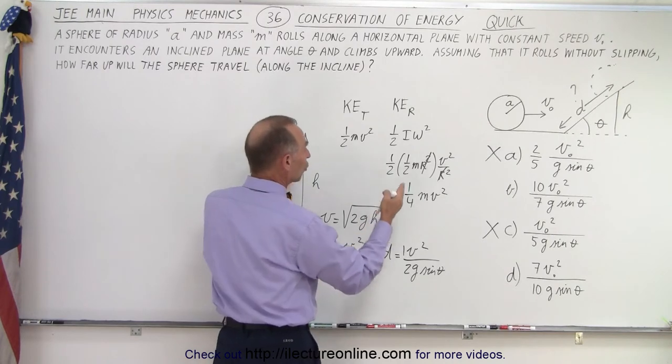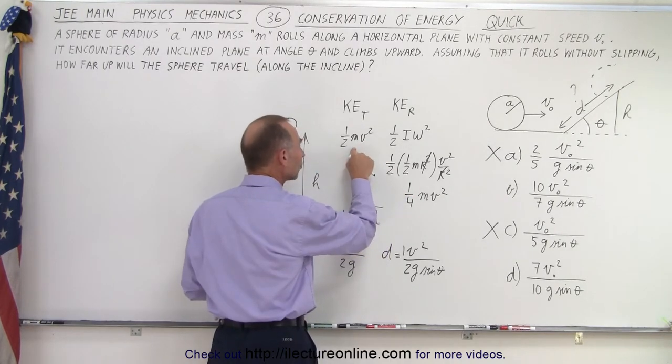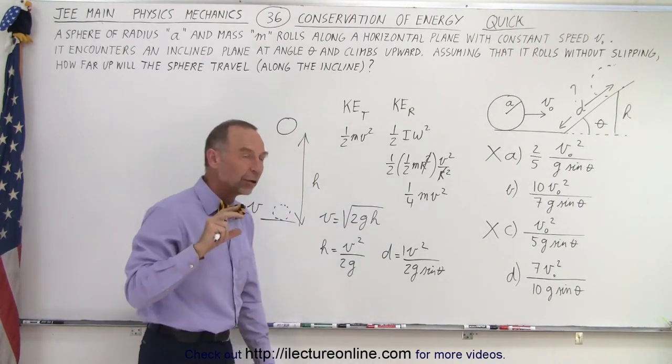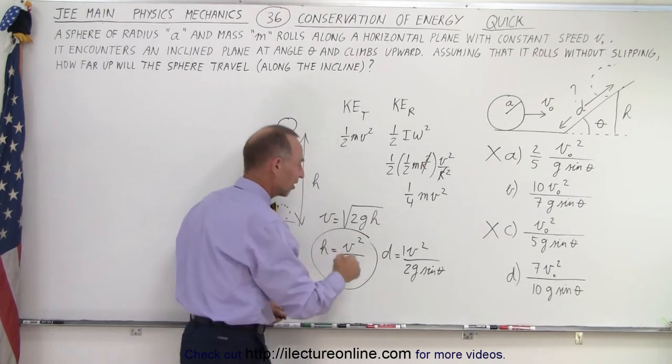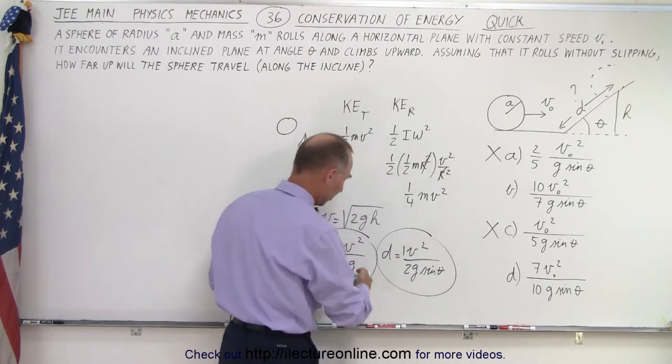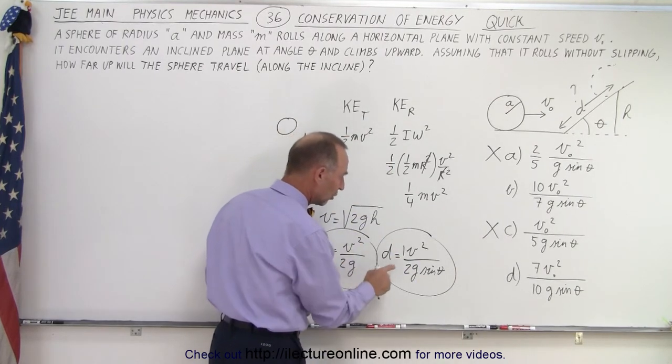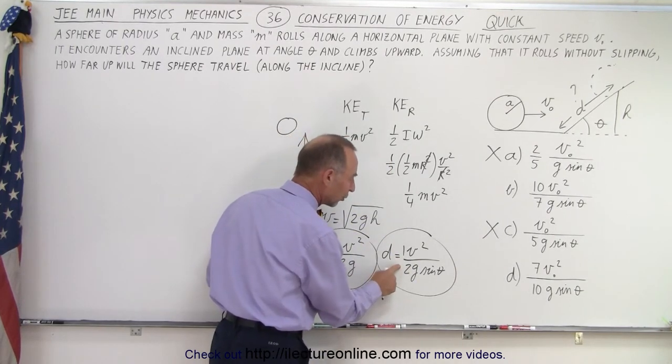In other words, the total can never be twice what we get out of the translational kinetic energy by itself. Since this is what we get out of the translational kinetic energy, either this or this, we talk about height or distance. Notice it cannot be twice that or greater.